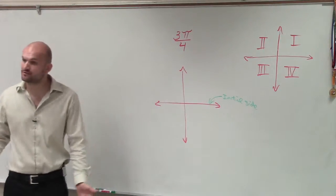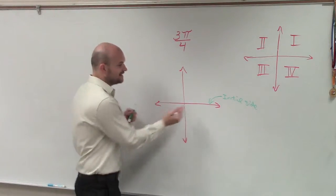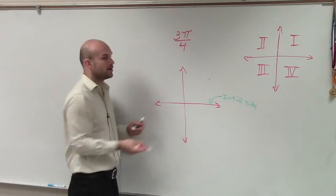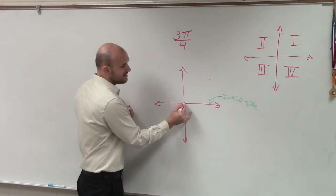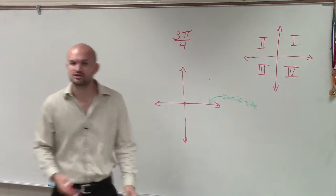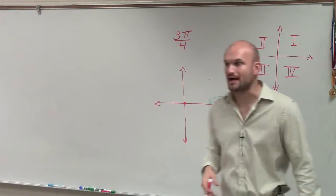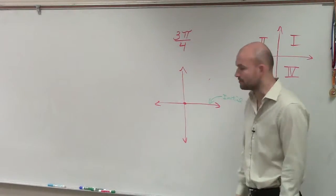So that is coming from our standard form. Now, what we need to do is I need to draw the second ray, 3π over 4, rotating with a vertex at the origin, rotating from our initial side. So our terminal side is going to be a rotation over from there.